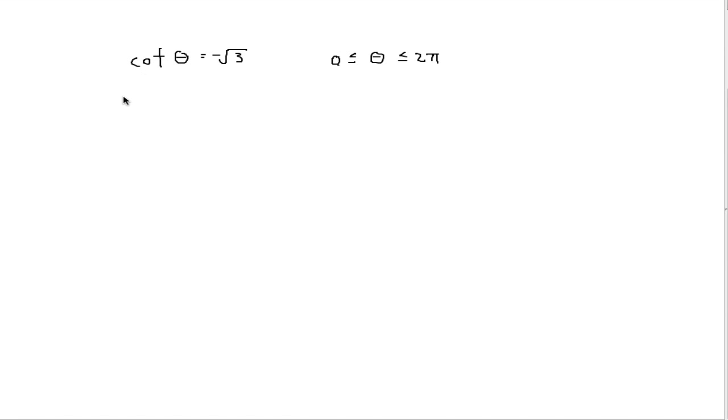So the first step is, we know that cotangent is 1, sorry, let me erase that. We know that cotangent is 1 over tan of theta, which is equal to negative root of 3. Therefore, tan of theta will be the reciprocal of this value, which will be negative 1 over root 3.